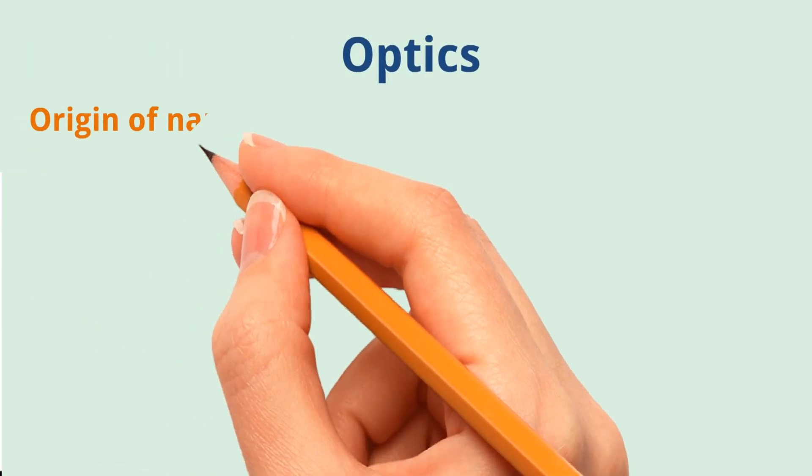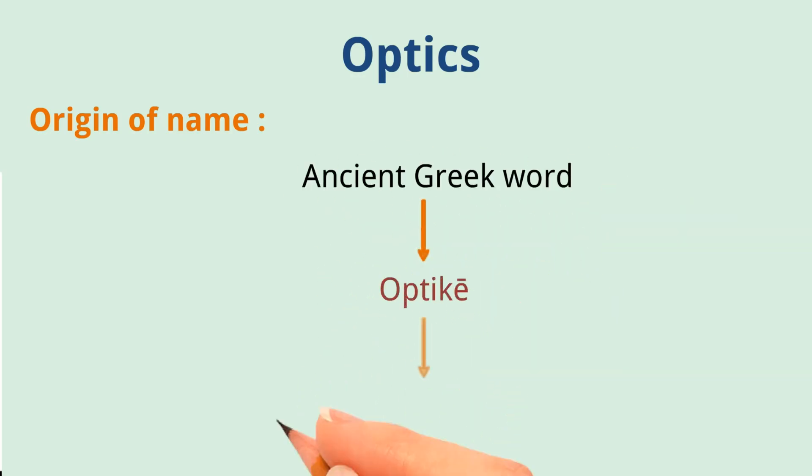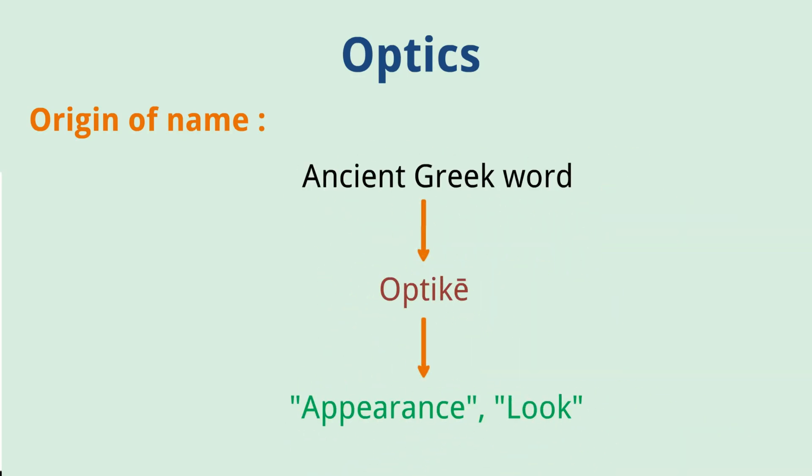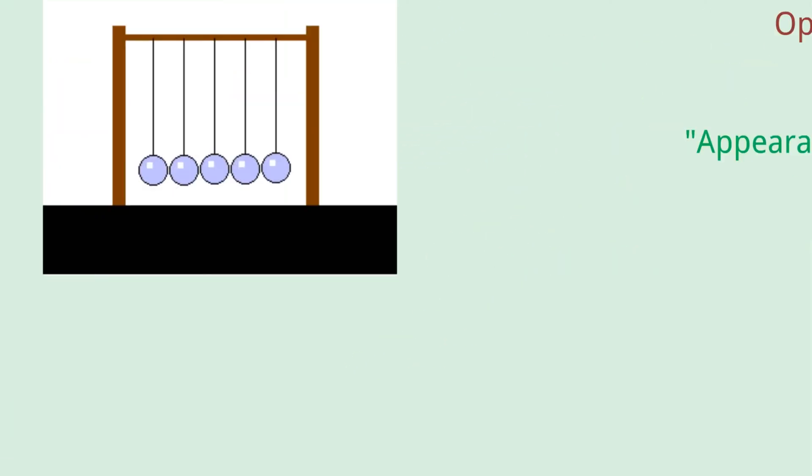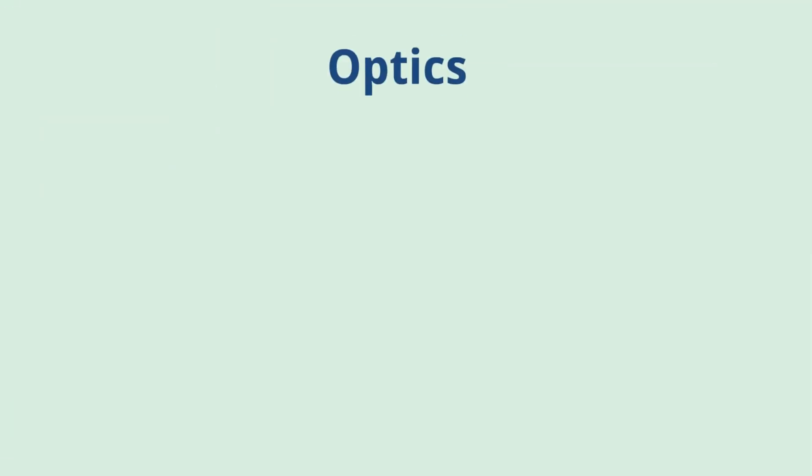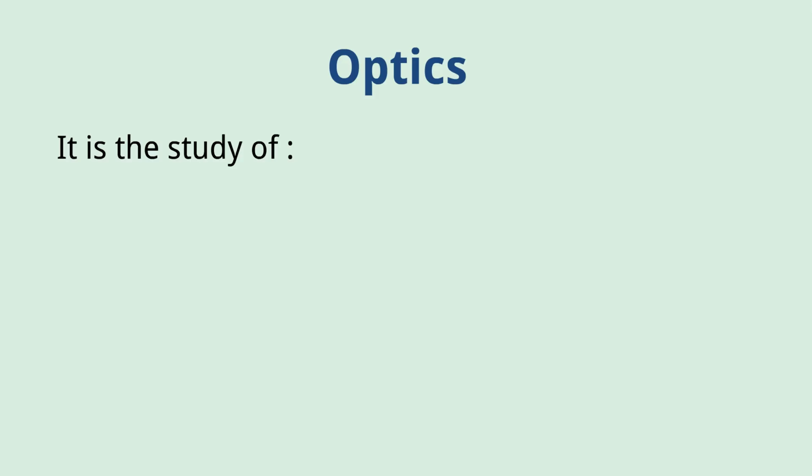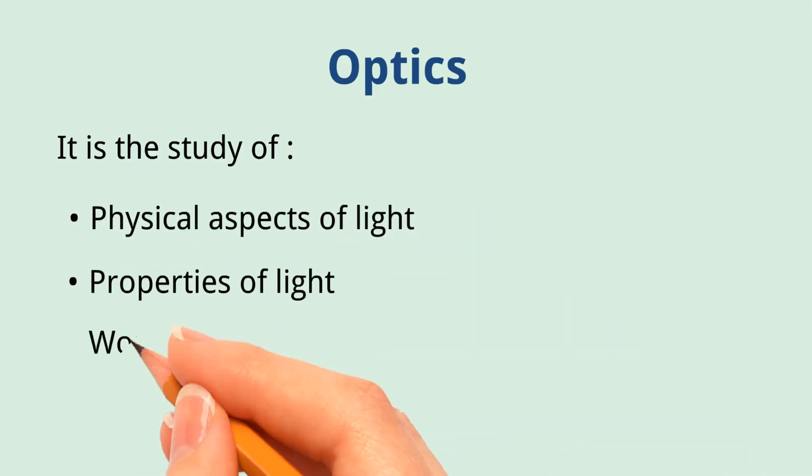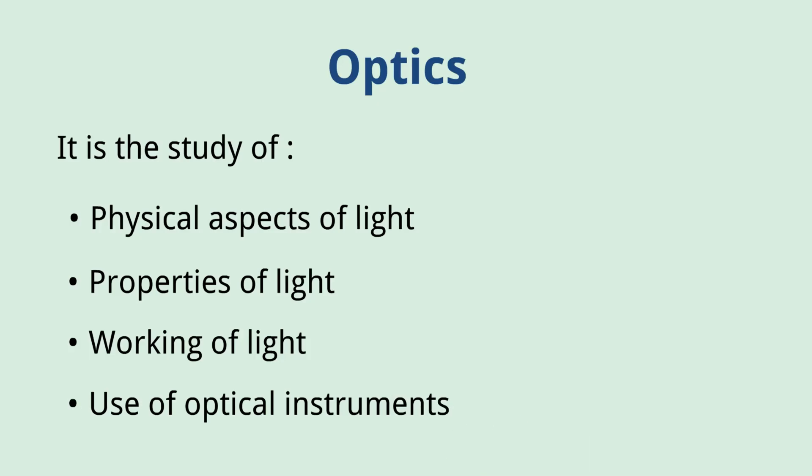Optics. Origin of name: The word optics comes from the ancient Greek word 'optique', meaning appearance or look. It is the study of physical aspects of light, its properties, working, and use of optical instruments.